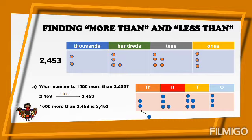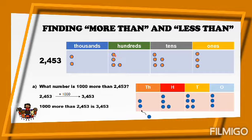Here the slide shows finding more than and less than. I have here a place value chart. The first place value is ones, and we have three dots or counters here. We also have tens with five counters, hundreds with four counters, and thousands with two counters. This number represents a total of two thousand four hundred fifty-three.